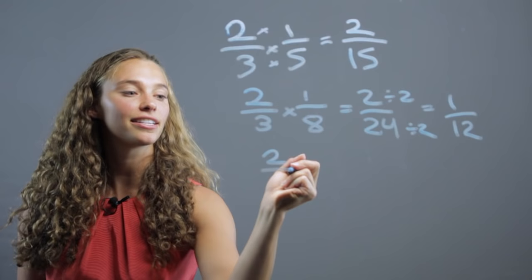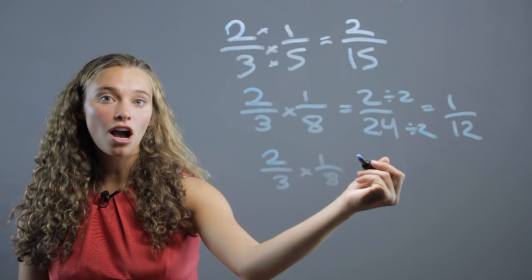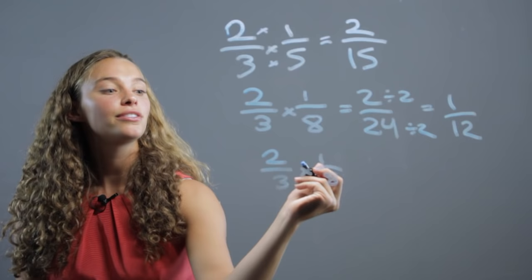The way that I prefer to do this problem looks like this. 2 thirds times 1 eighth. Instead of just going right to multiplying, we look for numbers that share the same common factor on the top and the bottom, just like we did here, but before we're multiplying.